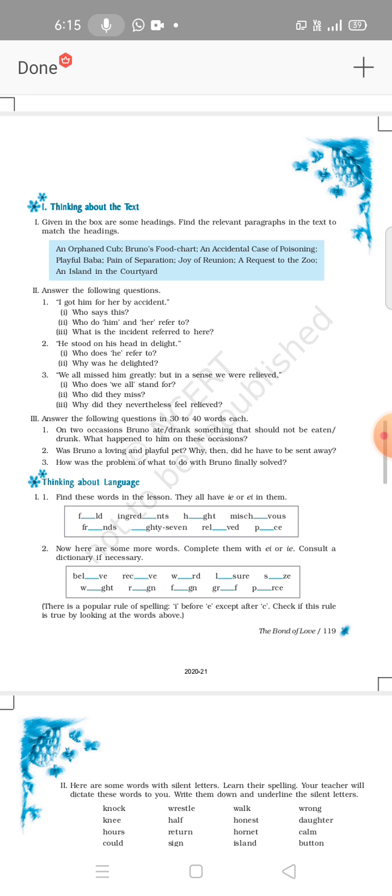The words: knock - underline the silent K. Wrestle, walk - L is silent. Wrong. Knight - K is silent. Half - L is silent. Honest. Daughter. Hours. Autumn. Column - L is silent. Could - L is silent. Design - G is silent. Island - S is silent. Button.